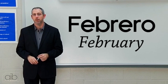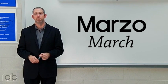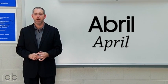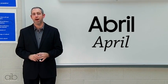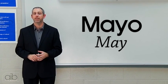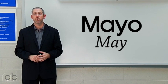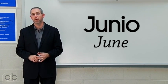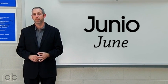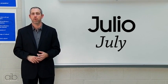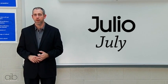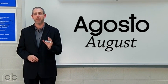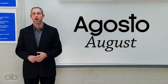February is febrero. March is marzo. April is abril. May is mayo. June is junio. July is julio. August — notice August does not have a U in it, it's just A-G-O — it's agosto.